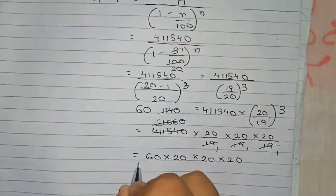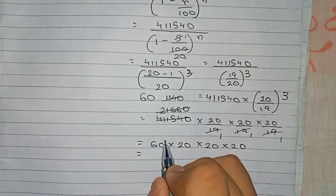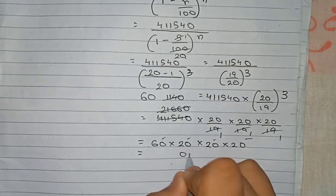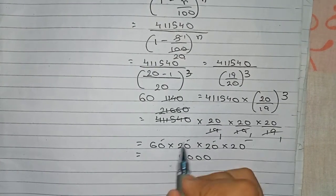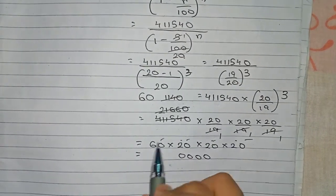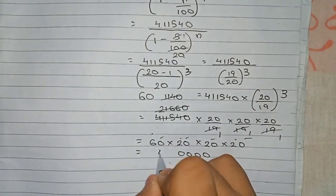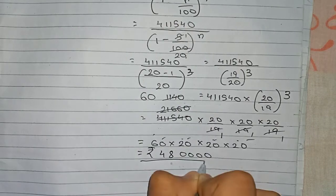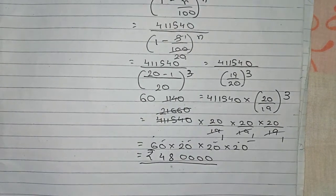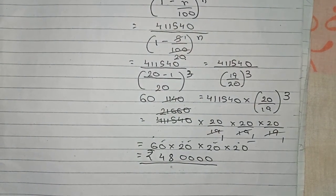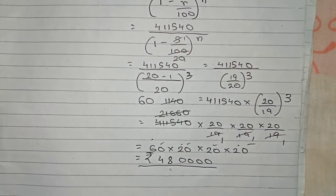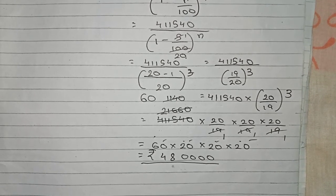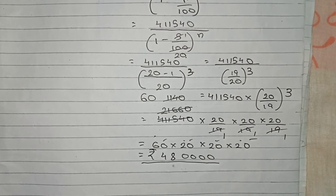So finally we have 60 × 20 × 20 × 20 remaining. Counting the zeros: there are four zeros total. Computing: 2 twos are 4, 2 fours are 8, 6 eights give 48 — so the answer is 480,00,000 rupees. Therefore, the value of the property three years ago was rupees 4,80,00,000. Thanks for watching, please subscribe for more solutions.